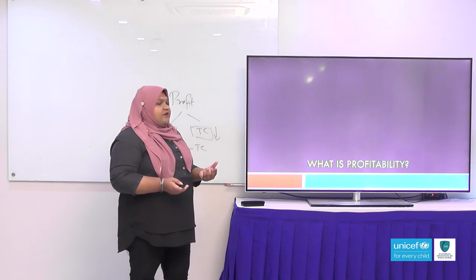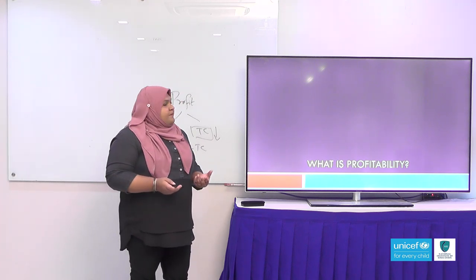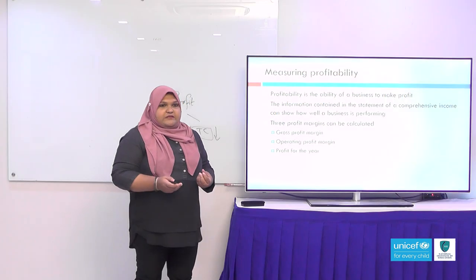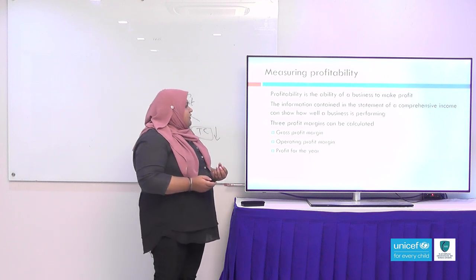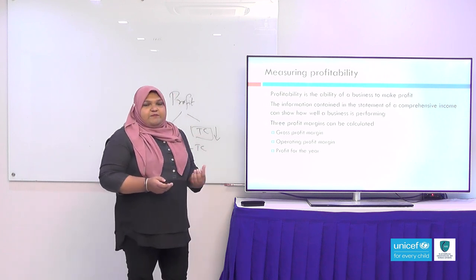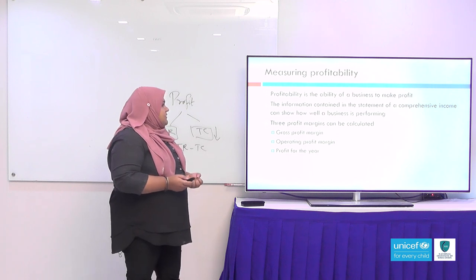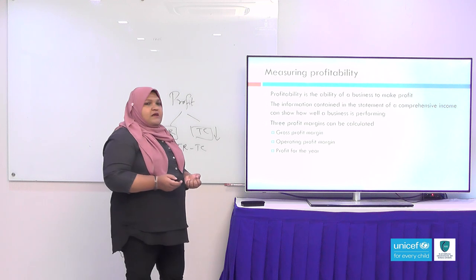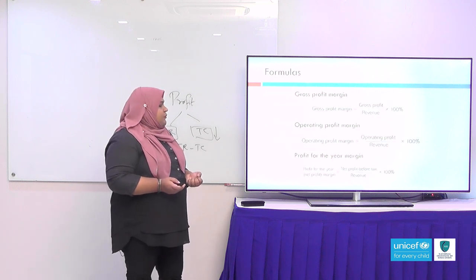Now let's look at what profitability is. Profitability is the ability of a business to make profit. The information in the statement of comprehensive income can show how well a business is performing. In order for a company to attract investors, they have to prove their profitability. Three profit margins can be calculated: gross profit margin, operating profit margin, and profit for the year margin.